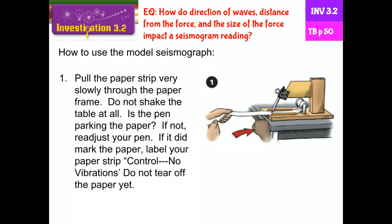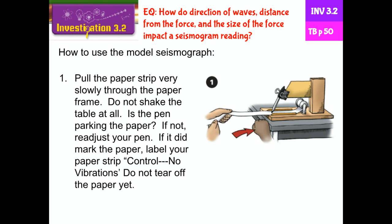Here's how to use the model seismograph. You're going to get a paper strip, and that strip is going to go through a couple of grooves. You're not going to shake it to start — you'll see what happens when you just pull the paper. If it doesn't make a mark, you'll need to adjust. This is your control: pulling it with absolutely no vibrations. That is the control — there's no earthquake, you're just seeing what it looks like with no energy moving through it.